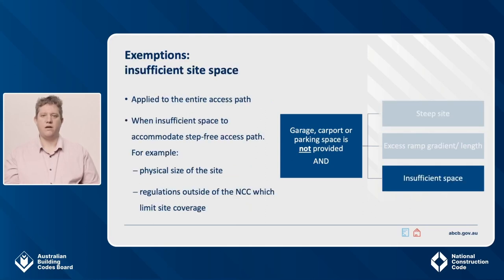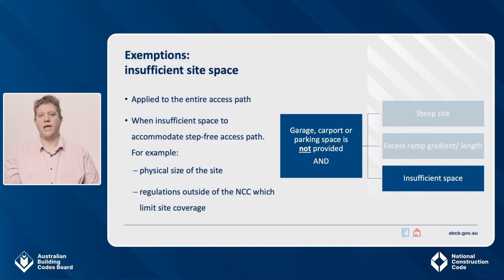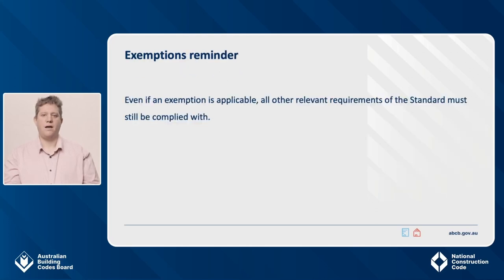This exemption is applied to the entire access path, not just the sections considered to be ramps. Its purpose is to provide for situations where the amount of available space on the site is insufficient to accommodate a step-free access path. This may be due to the physical size of the site, or regulations outside of the NCC which limit the proportion of a site that can be covered by structures and/or impervious ground coverings. Remember, these exemptions apply only to Part 1, so even if an exemption is applicable, all other relevant requirements of the standard must still be complied with.